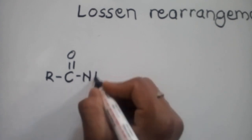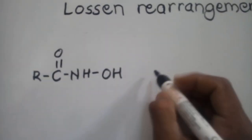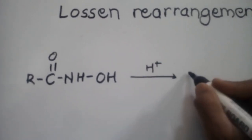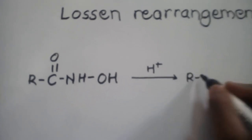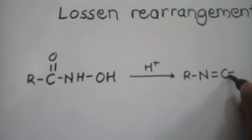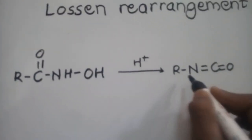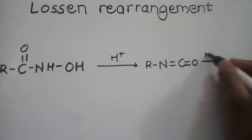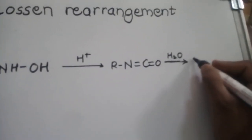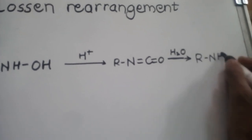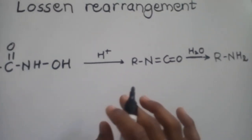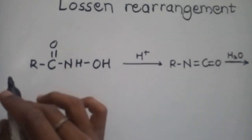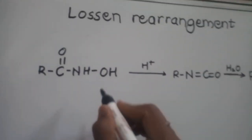The hydroxamic acid gets converted into an isocyanate through Lossen rearrangement, and then undergoes hydrolysis to form primary amines. This means that we get a lower amine from a higher amide — one carbon is effectively removed. Now we will see how this happens by looking at the mechanism.